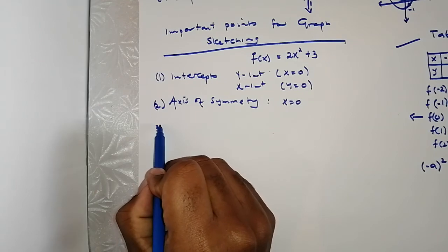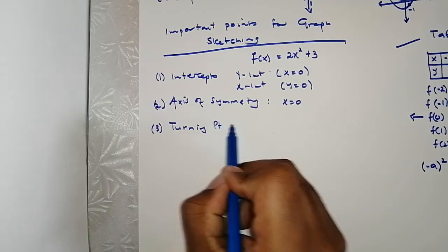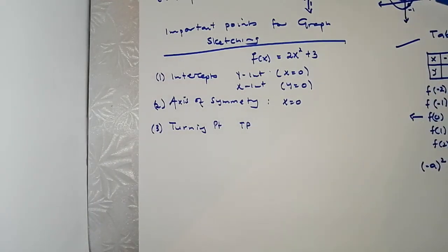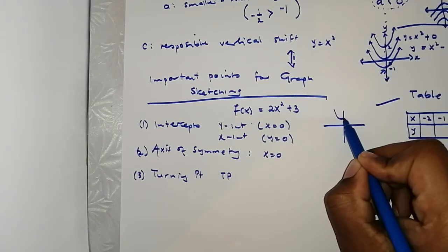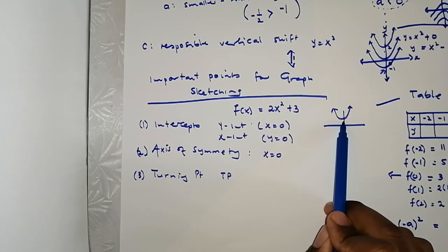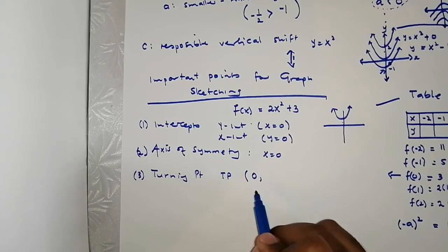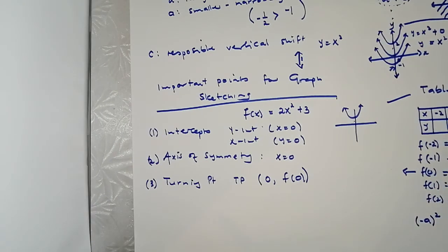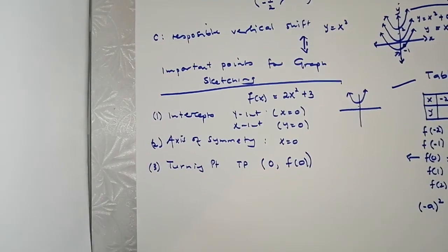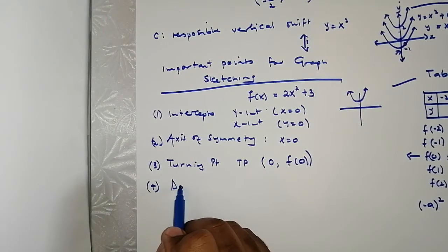Third, we're going to look at the turning point — where the graph turns. For example, this graph turns at a certain point, and that's the value we're looking for. The axis of symmetry involves the turning point, so it's going to be (0, f(0)). I'm going to tell you more about this on the next video. Then we can draw the graph. Also, after sketching, we must find the domain of the graph — where the function is defined.